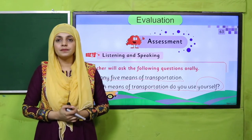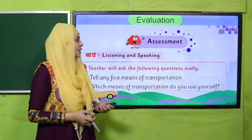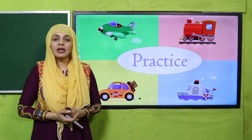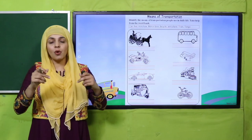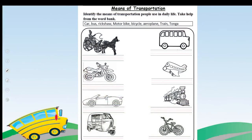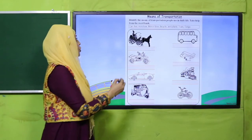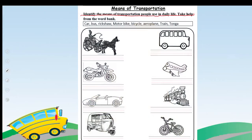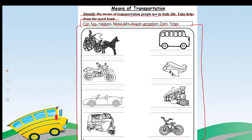Now let's move to the practice. You can download this worksheet from the description box below this video, or you can get it in print form from your teacher. Write your name and class on the worksheet, then start. The task is: identify the means of transportation people use in daily life — take help from the word bank. The word bank includes: car, bus, rickshaw, motorbike, bicycle, aeroplane, train, and tonga. Pictures of all these means of transportation are given — identify them and write the correct name.